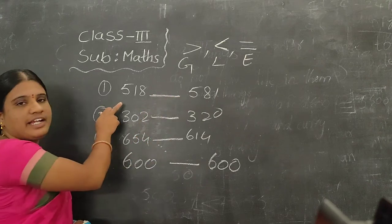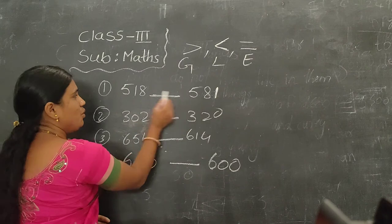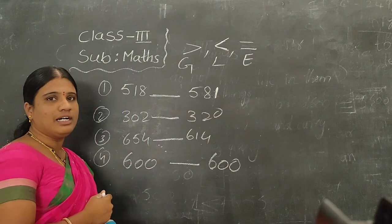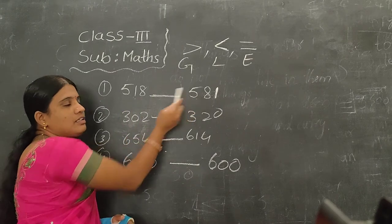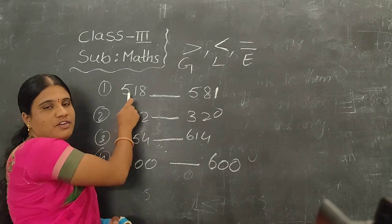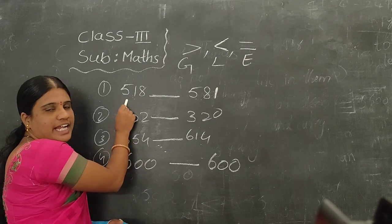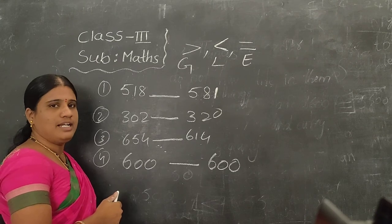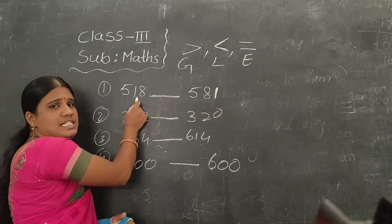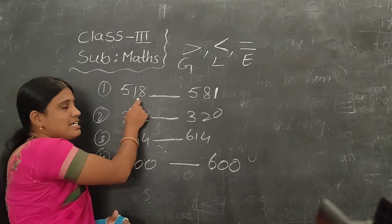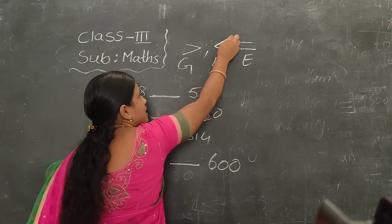In the first question, we are given 580 and 581. So from these two, which is the smallest number? The first one or the bigger? Here we have 518 and here we have 581. These are both 500 numbers, but here we have 18 and here we have 81. So 18 is less than 81. That means 18 is smaller than 81, so we use the less than symbol.